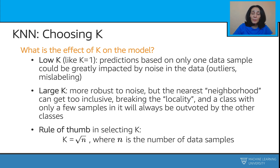K-nearest neighbors tends to be more successful handling classification problems where each class has many possible prototypes and therefore the decision boundaries are usually quite irregular.